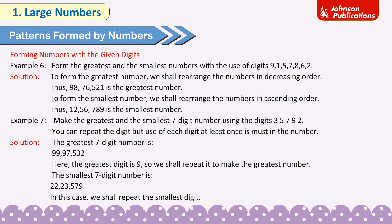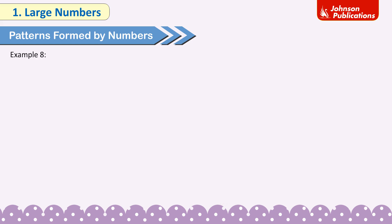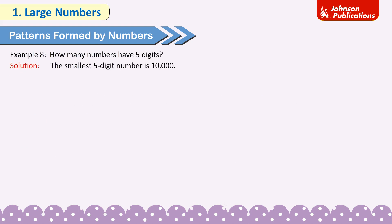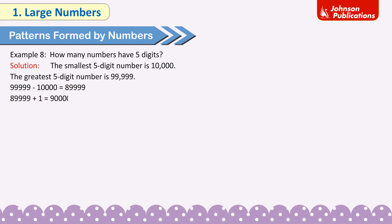Example 8: How many 5-digit numbers are there? The smallest 5-digit number is 10,000 and the greatest is 99,999. 99,999 − 10,000 = 89,999; then 89,999 + 1 = 90,000 (adding 1 back for the number removed). Hence, there are 90,000 five-digit numbers.